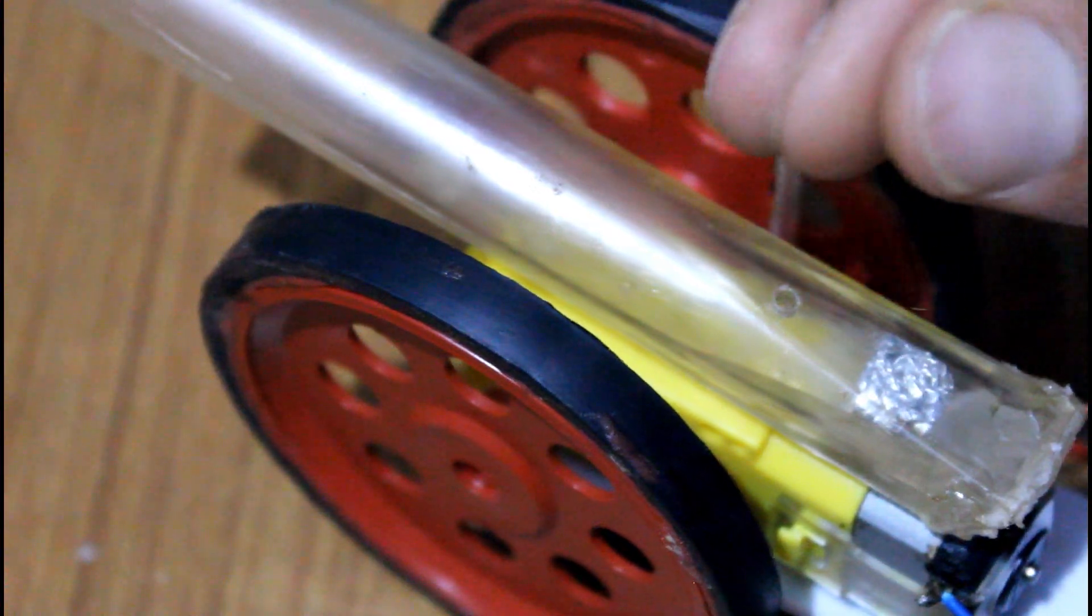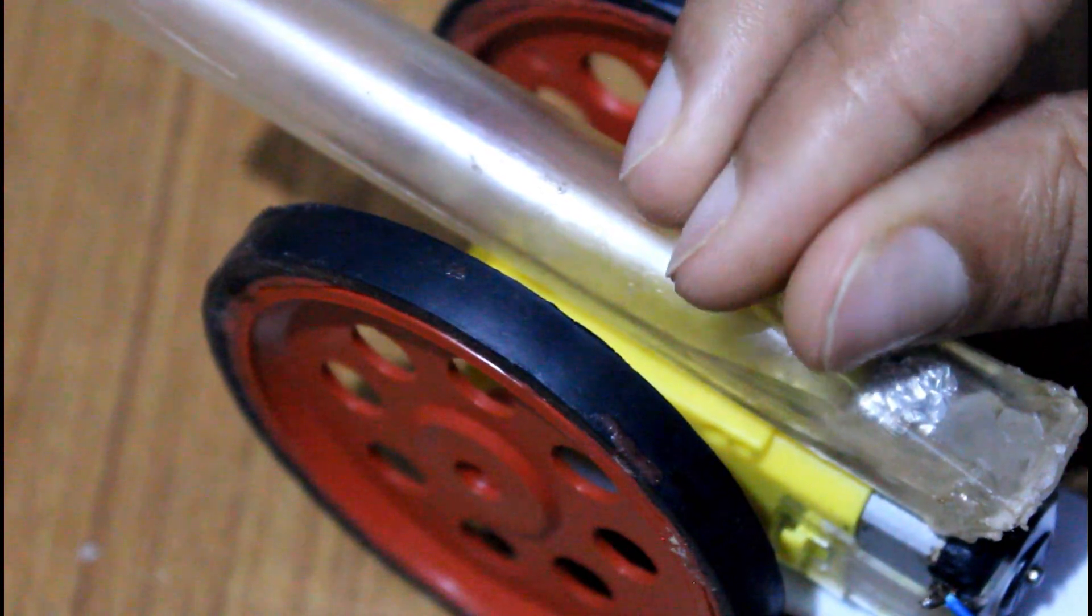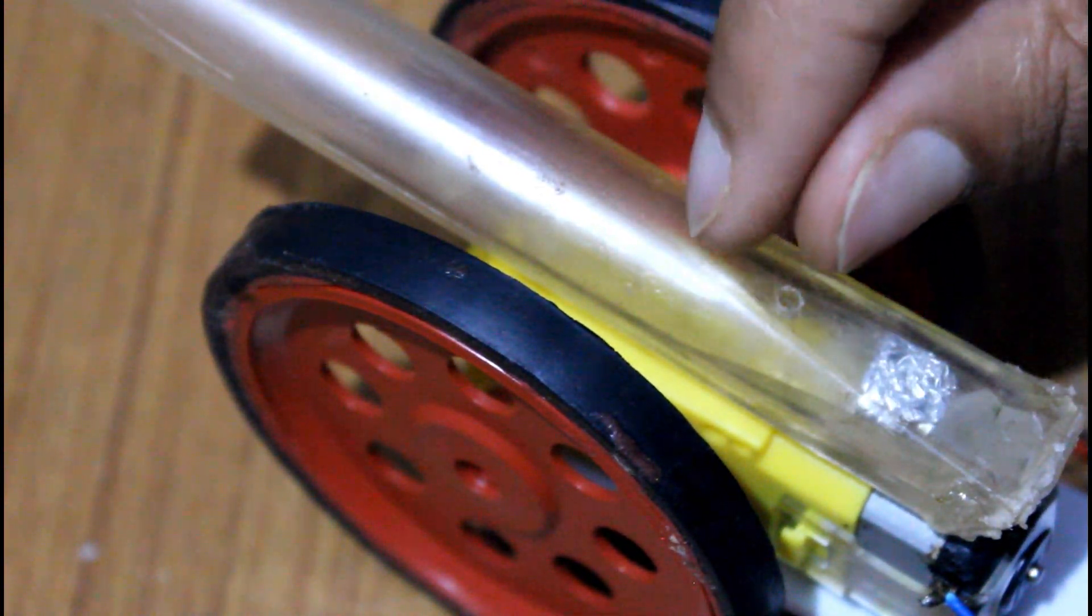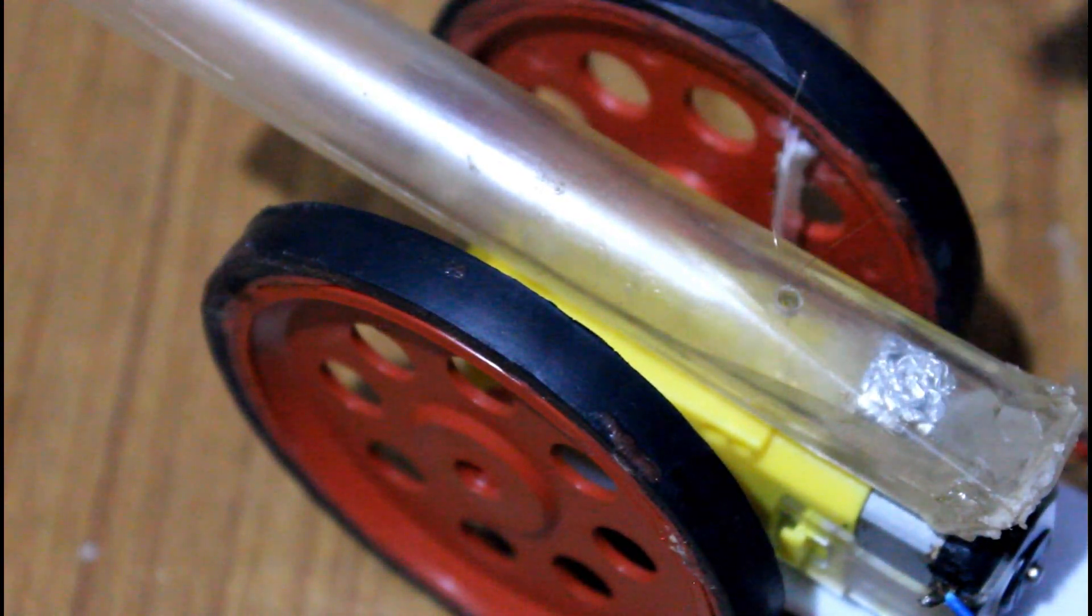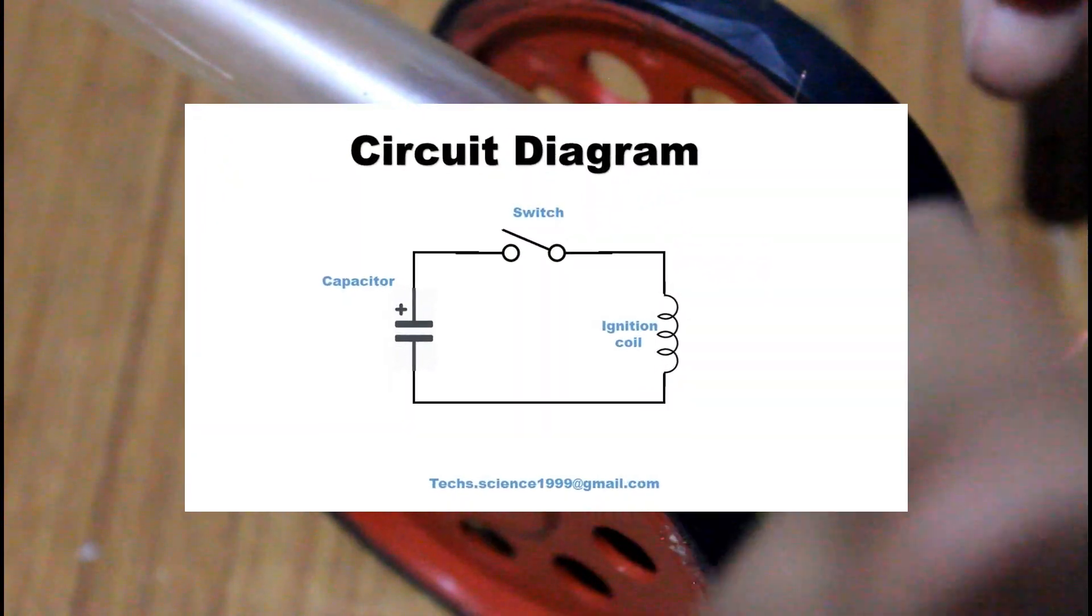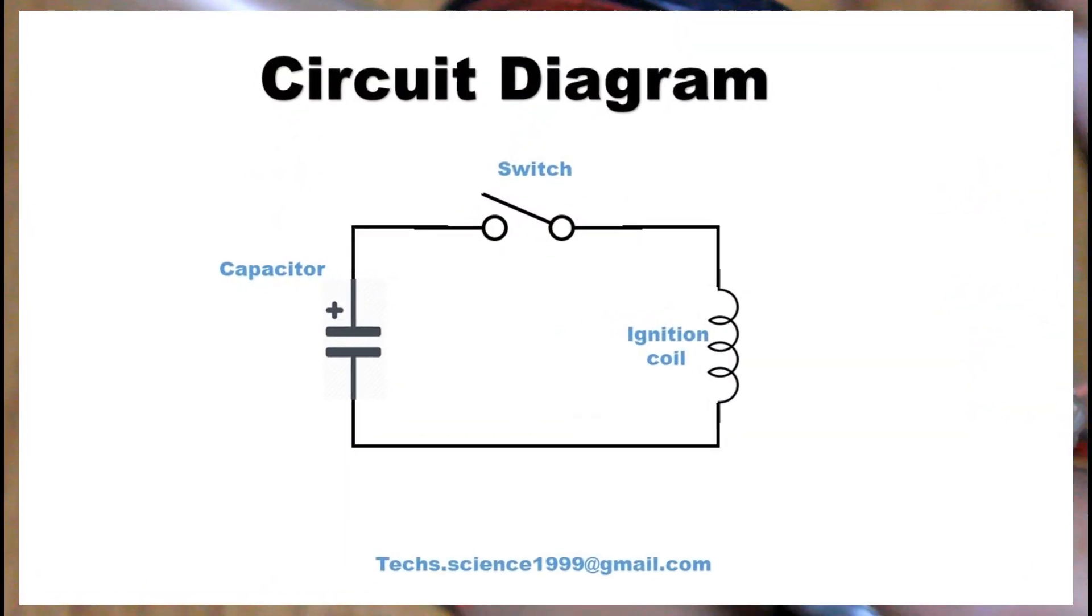As igniter I am using this wire I have removed from the vape. And now I have to do a wiring work. Here you can see the circuit diagram. It's quite easy. I have just connected them in series.